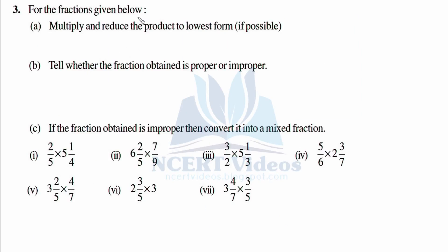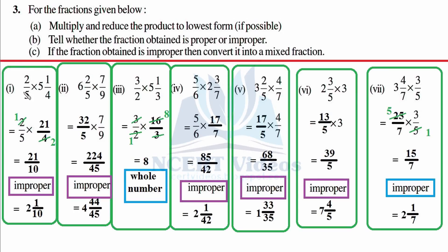Question 3: For the fractions given below, first multiply and reduce the product to its lowest form if possible. Then tell whether the fraction obtained is proper or improper. Last, if the fraction is improper, convert it into a mixed fraction. Let's begin — 2/5 as it is, and the mixed fraction is converted to 21 over 4.